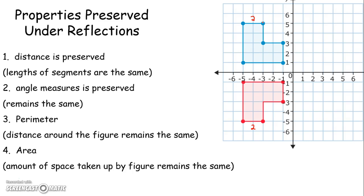Angle measure is preserved. So for instance, if this is a 90 degree angle right here, if that's 90 degrees, guess what? When you reflect it, it's still going to be a 90 degree angle. This is a rigid motion. The length of the side remains the same. The angle measures remain the same.